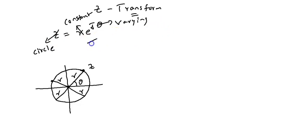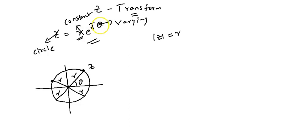Here, mod z means radius. Mod z is r, and the phase angle of z is theta.